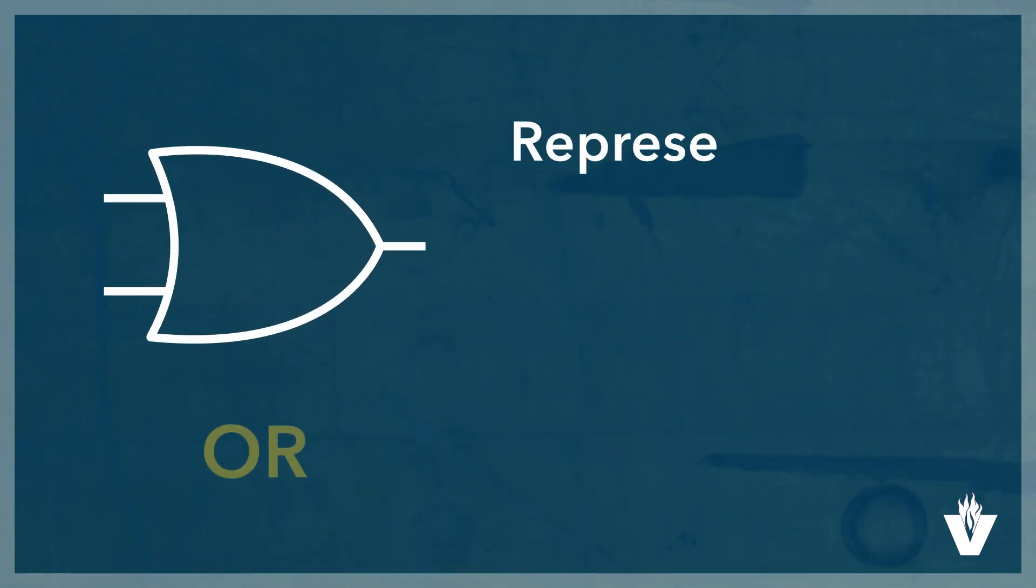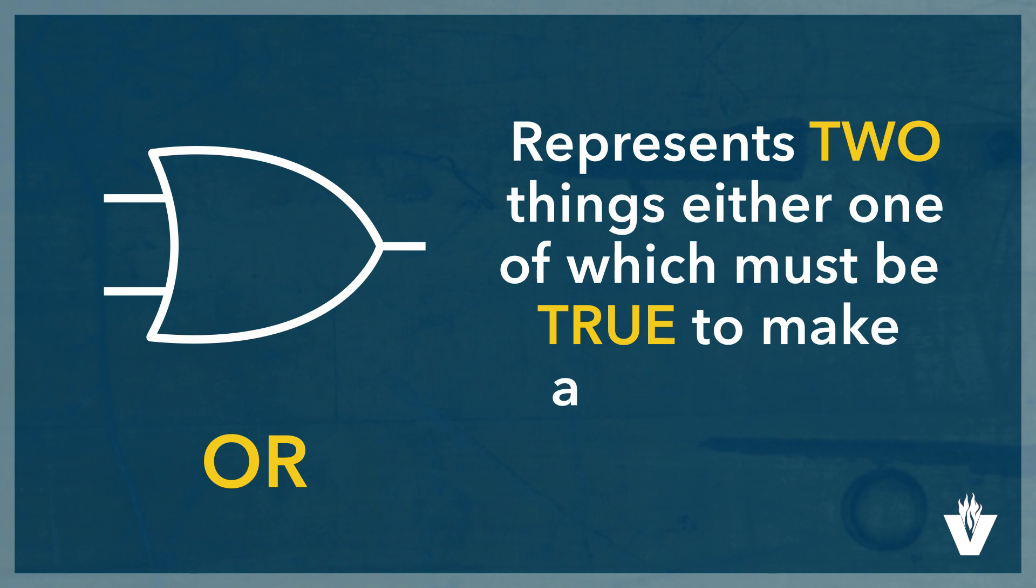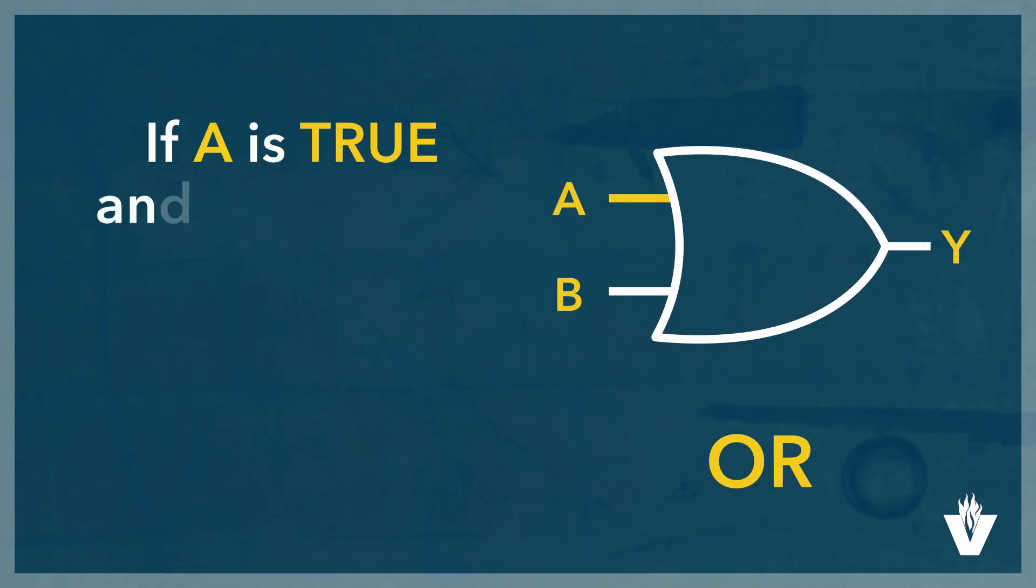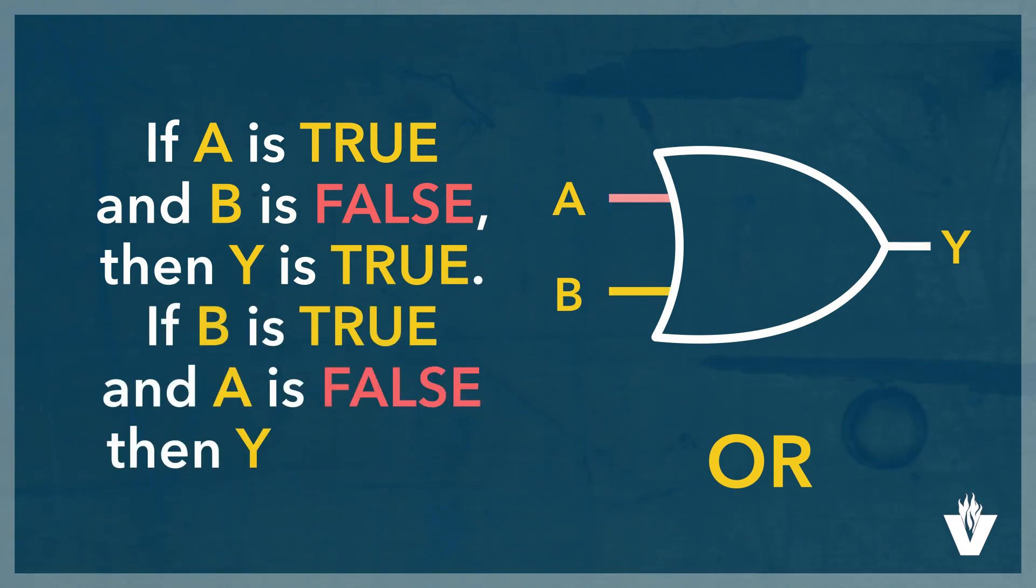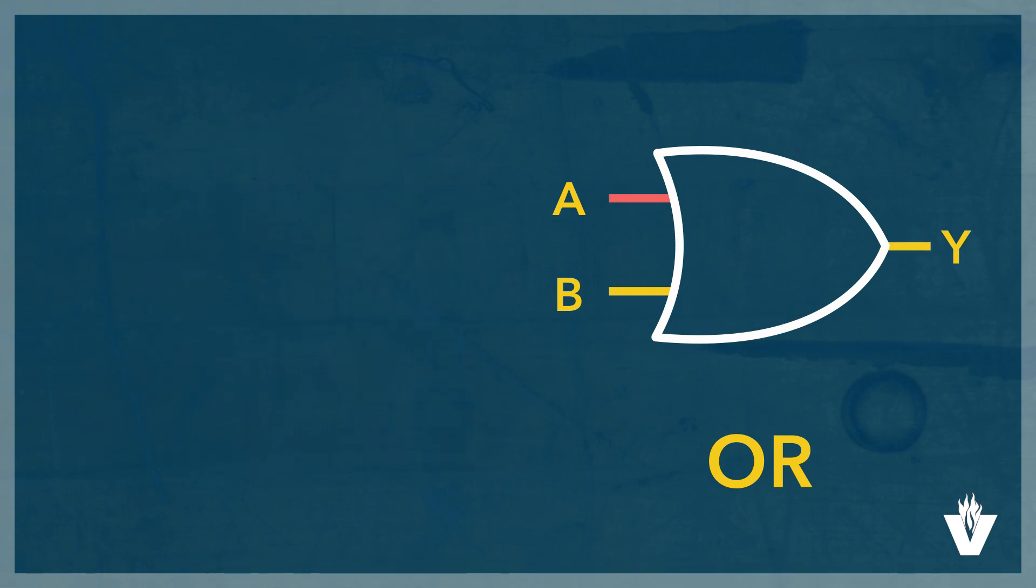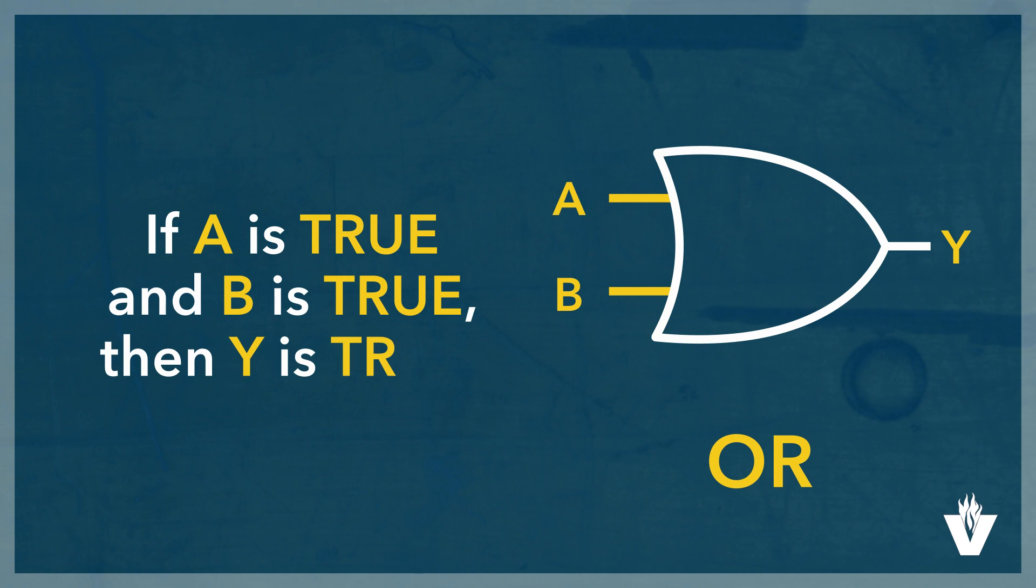The OR gate represents two things, either one of which must be true to make another thing true. If A is true and B is false, then Y is true. If B is true and A is false, then Y is true. Note that if A is true AND B is true, then Y is true. Technically, the OR function is also an AND function.